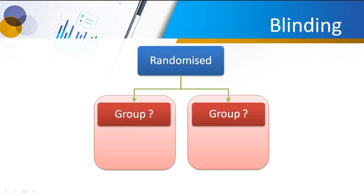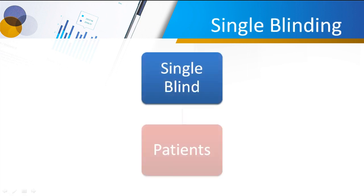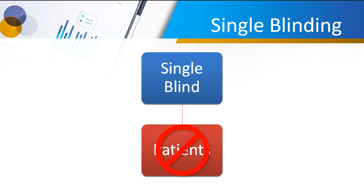And we've got something called blinding as well. This is where you randomise your patients into various groups in a way that you don't know what treatment they're going to get — you might not know which group they're going to be in. There are different types of blinding. We've got something called single blinding, which is where the patients don't know whether they're getting a treatment or a placebo.